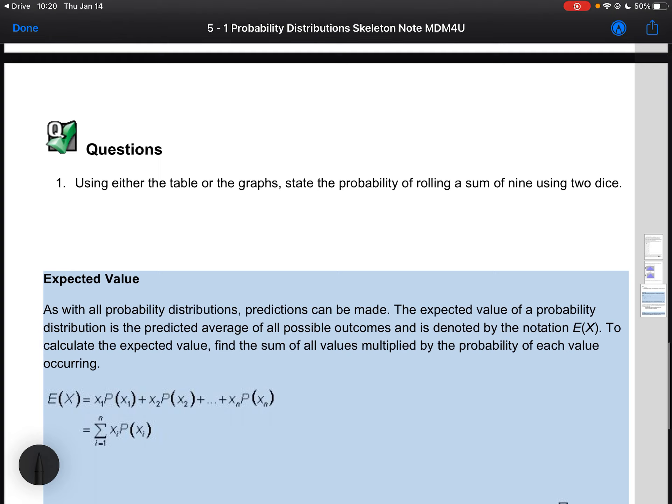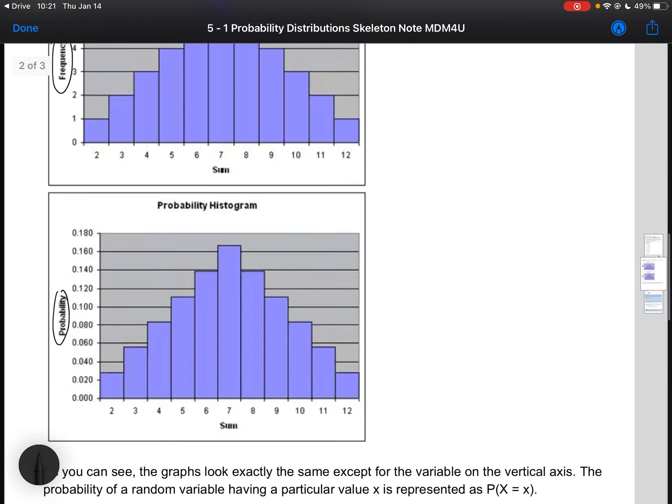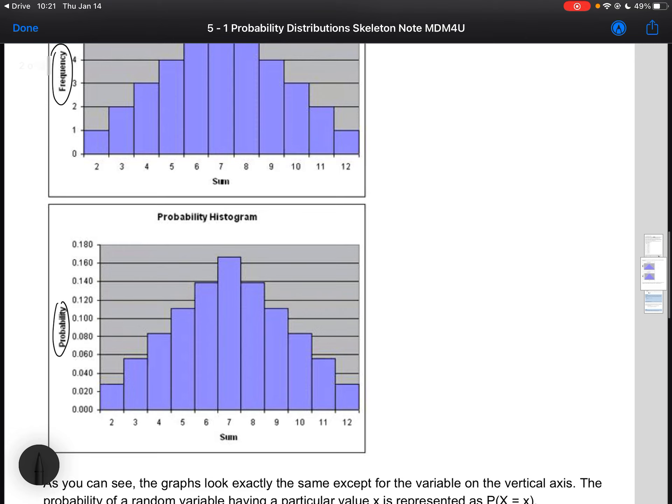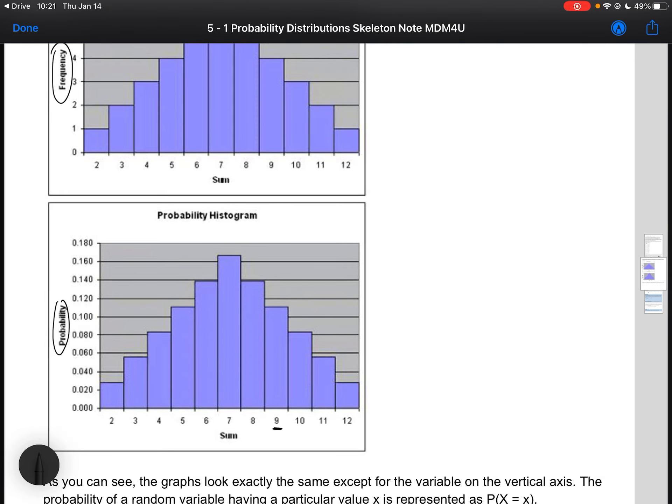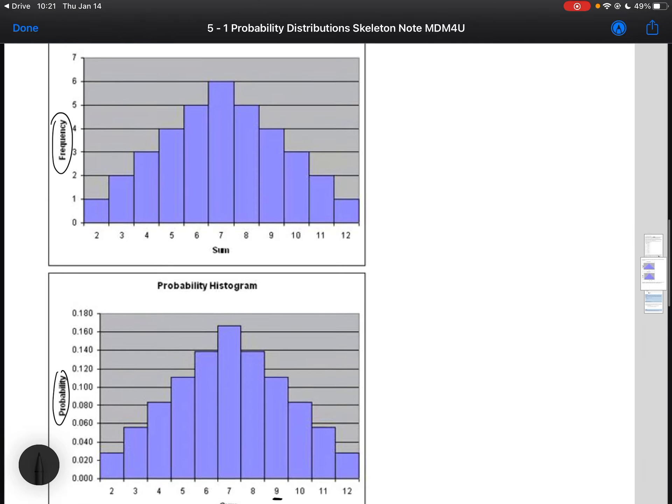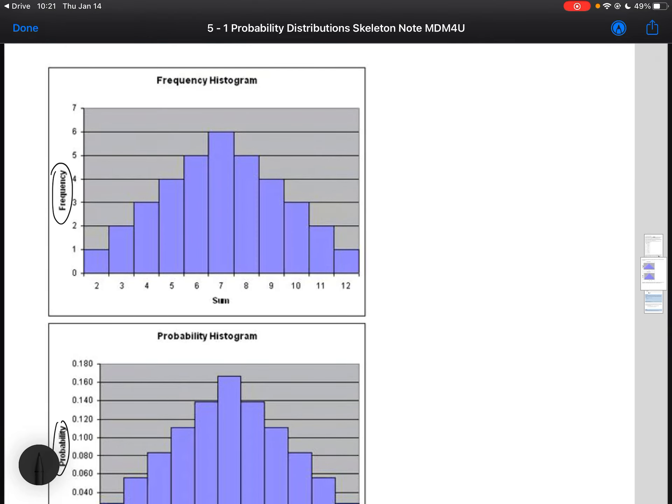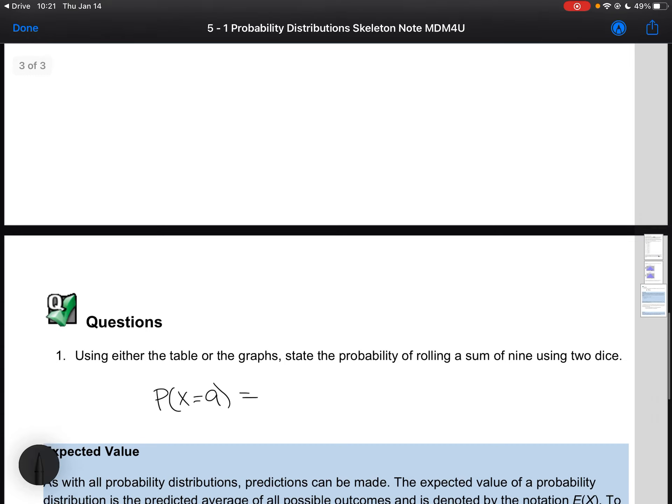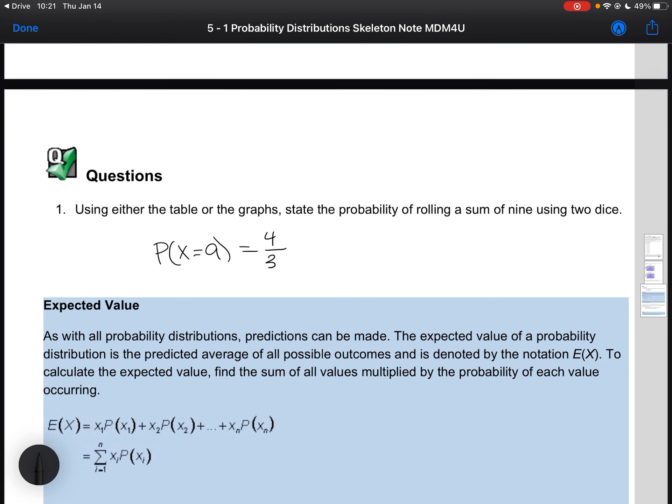Let's do an example of a probability distribution type question. The first one says: using either the table or the graphs, state the probability of rolling a sum of nine using two dice. What is the probability that my random variable is going to be equal to nine? If I scroll up, the bar that I'm looking at is nine, and I see that my probability is kind of hard to read. I think it's about 0.11, but I'm going to go up to my frequency table. I see that it is 4 out of a possible 36 outcomes. So 4 out of 36, or 1 out of 9, is my probability.